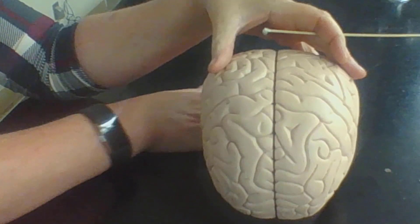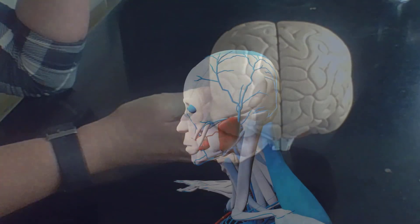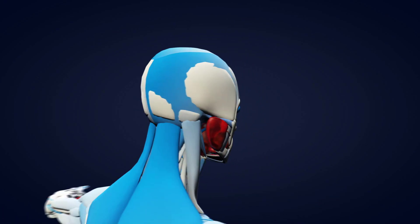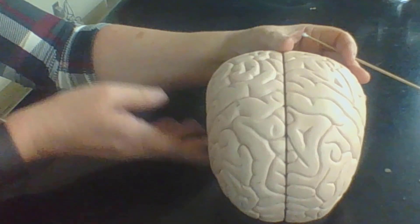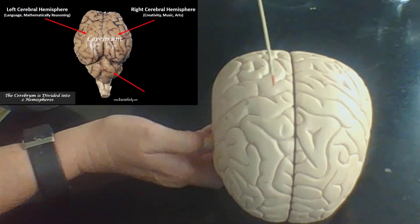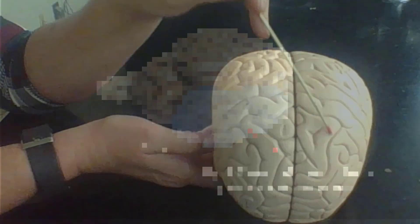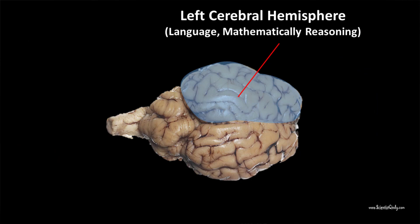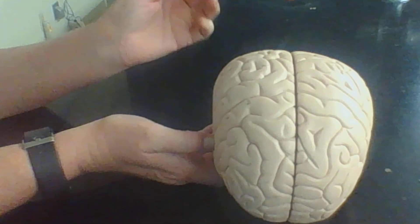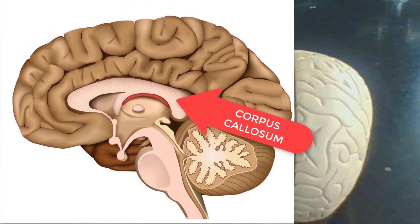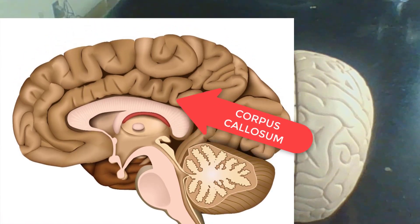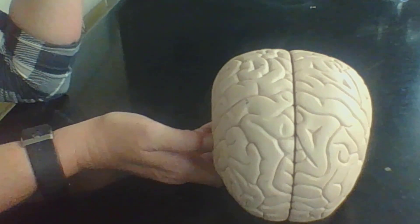Remember in anatomy, we are always talking about a person in anatomical position. The right is going to be the right side of the patient, not the right side of you as the observer. The cerebrum is separated into the right and left hemisphere. The right hemisphere has our creativity, music, and art. The left brain is known for language, mathematical reasoning, and logical reasoning. The right and left hemispheres communicate through a structure called the corpus callosum.